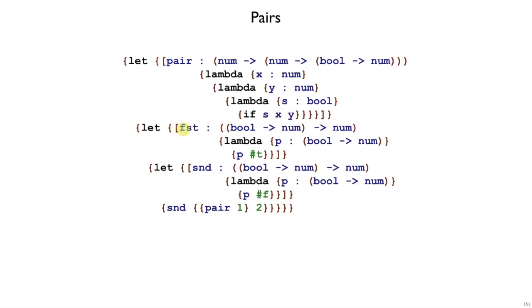And then we can have an FST operation and an SND operation - second takes one of those pairs and passes it true to get the first thing out or passes it false to get the second thing out. And if you work through the types here, it all adds up.